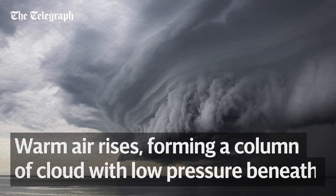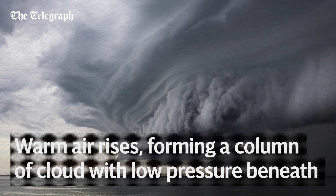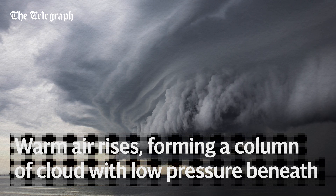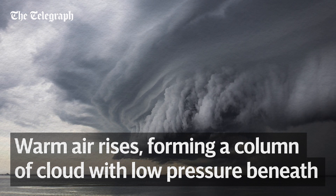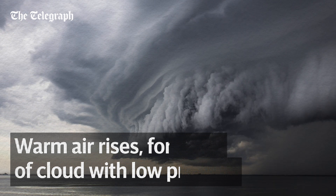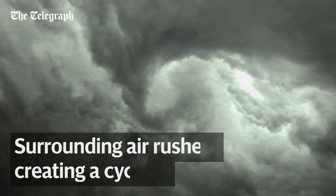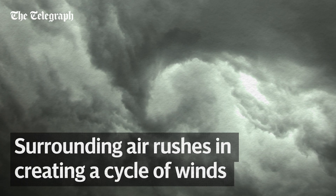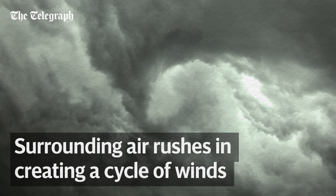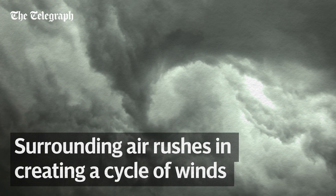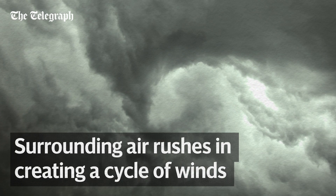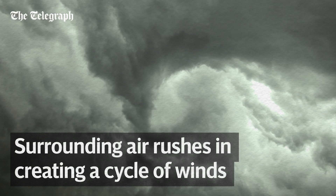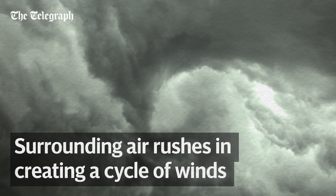The warm air rises and creates a column of clouds with an area of low pressure beneath it. Surrounding air rushes in to fill this pocket of low pressure, creating a cycle of winds and a cluster of thunderclouds called a tropical disturbance.